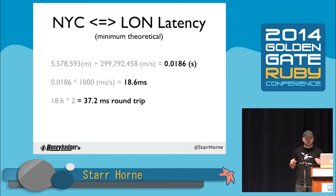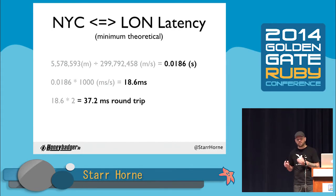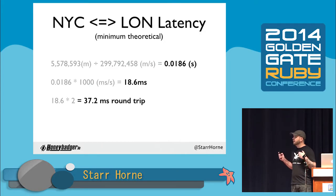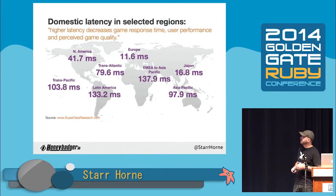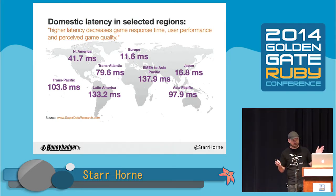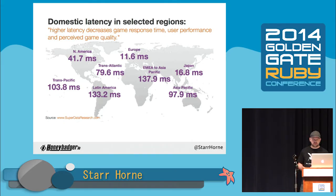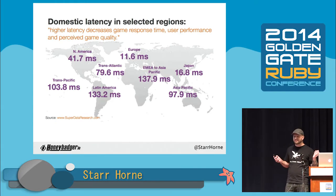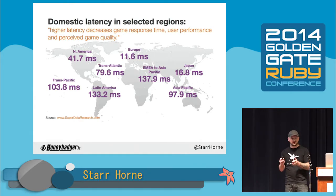So real-world latencies look like this: New York City to London is about 70 to 90 milliseconds. Within the U.S., latencies of about 40 milliseconds are common. Japan has about 16 millisecond latency — not because they're super advanced, but because the country is a lot smaller.